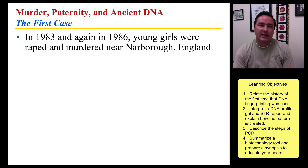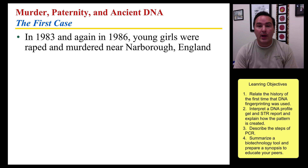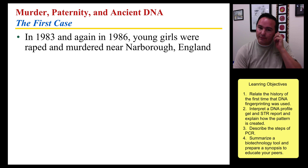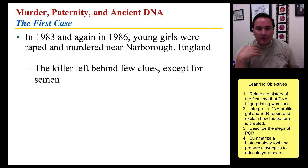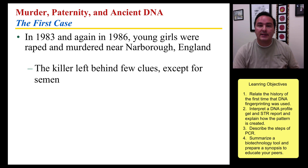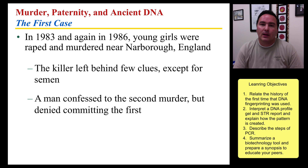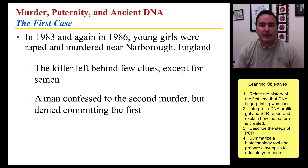The first time DNA profiling was used in a criminal case, we need to go back to about 1986. But three years earlier, in 1983, a young girl was murdered and raped in a town near Narborough, England. When they first did the investigation, there were very few clues left behind, but they did a rape kit, so they had collected semen, and they didn't find anyone in that first go-around.